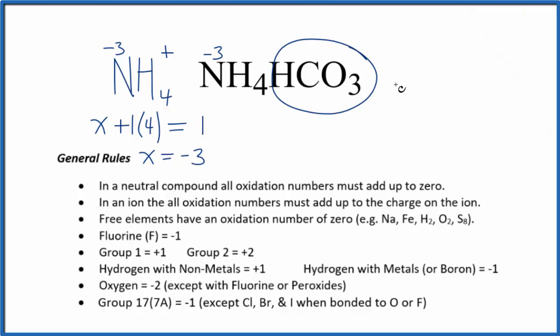Let's do this bicarbonate ion now. So we have HCO3. The whole thing has a 1- charge. So all the oxidation numbers add up to that minus 1 there.